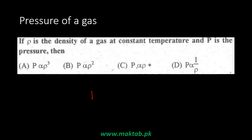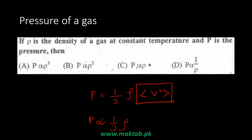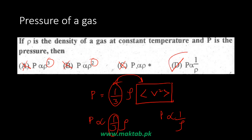For the pressure-density relationship: from our derivation, P = (1/3) × ρ × v̄². At constant temperature, the mean square velocity is constant. So P is proportional to ρ. Option D states P is proportional to ρ (directly), which is correct. Options A, B, and C are all wrong.